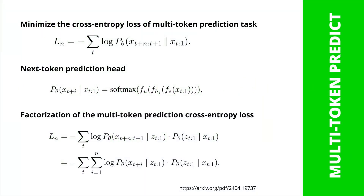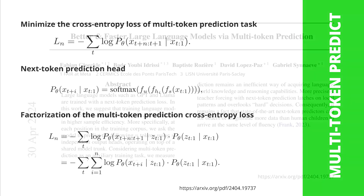Here are the simple formulas to minimize your cross-entropy loss of a multi-token prediction task with next token prediction heads. You do a factorization of the multi-token prediction cross-entropy loss and you are good to go. You can code this and you have your new transformer model.